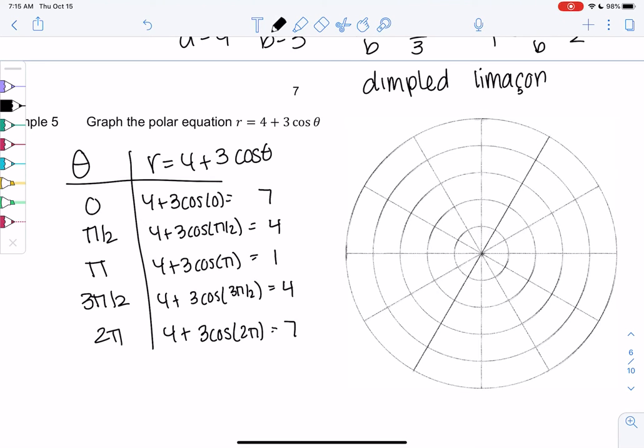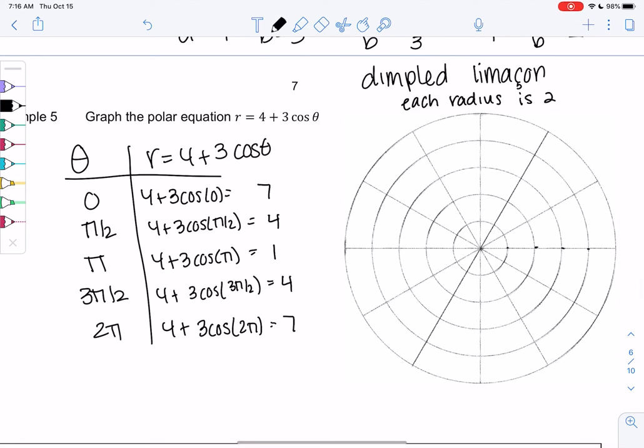So since I have kind of a smaller graph, we'll just say each radius is two. Just because the graph paper only goes at one, two, three, four, five. We can just pretend there's like invisible ones in between. Then we can graph out to seven. So zero and seven. One, two, three, four, five, six, seven.